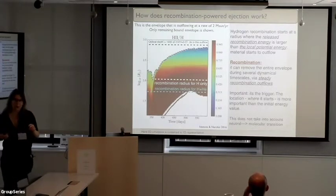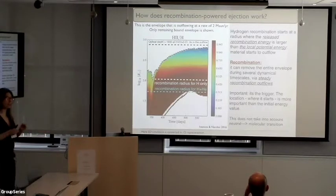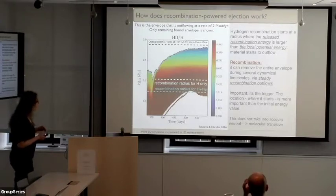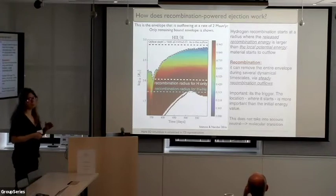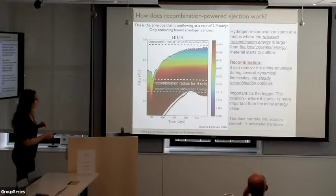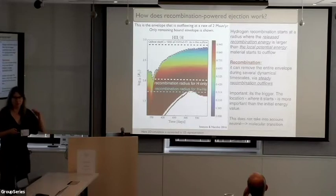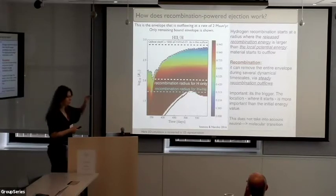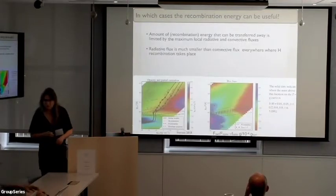The second condition is whether you can capture that energy so it's not lost immediately — that's a condition which has to be checked. In the cases I modeled, the recombination radius is here and recombination takes place here. The envelope shown is still formally bound; recombination continues with about 20% of hydrogen recombined here. Once it recombines, it's already unbound, but the optical depth is more than a thousand at this particular frequency, making it easy to capture that energy.